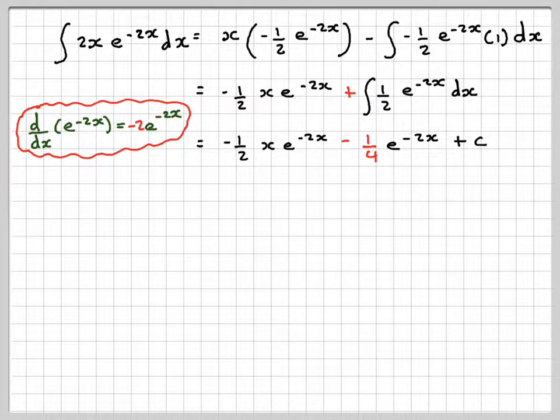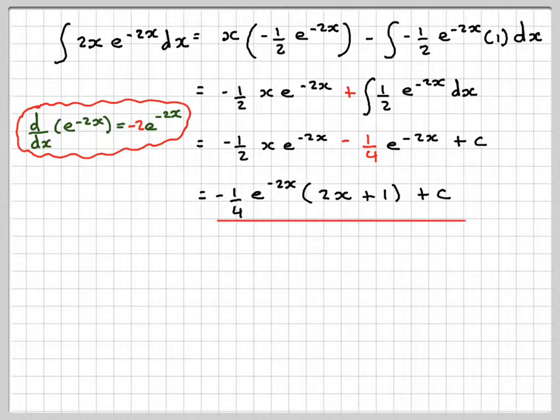You could leave the answer like that, but there is a common factor. If you take out minus a quarter e to the minus 2x, that means this one here you multiply by 2. So you get minus a quarter e to the minus 2x times 2x plus 1, plus c.